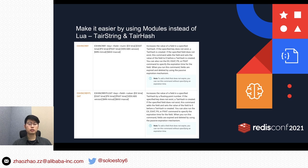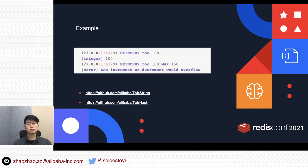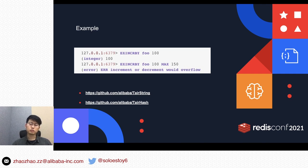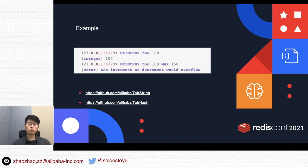You can use the EXINCRBY command. Here is the example: the EXINCRBY command without the max limit executes successfully, but if the counter goes out of range with the max limit set, you receive an error message. So it's very easy — only one command, no Lua script needed. These two modules are open source projects. You can fork and download them from GitHub. Have fun with them.